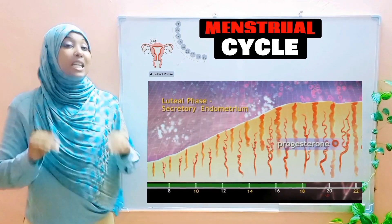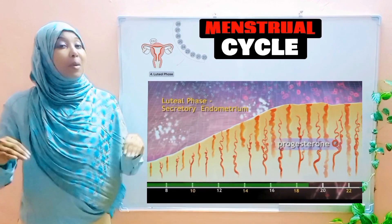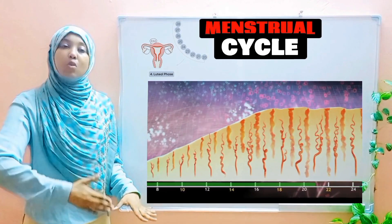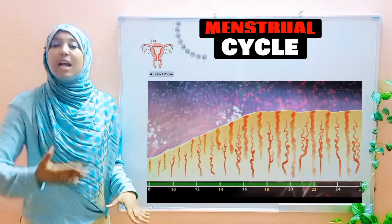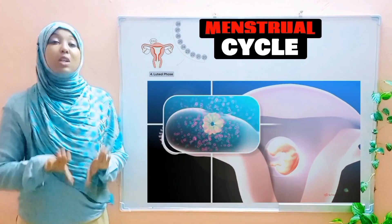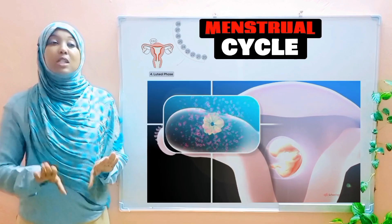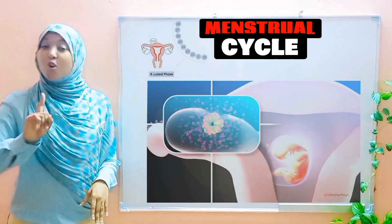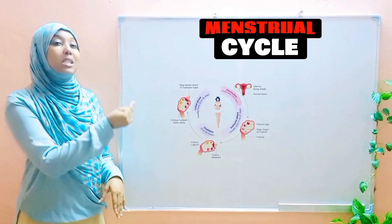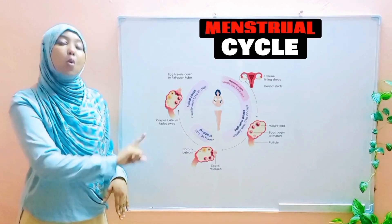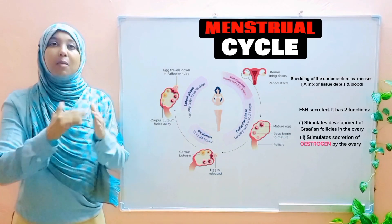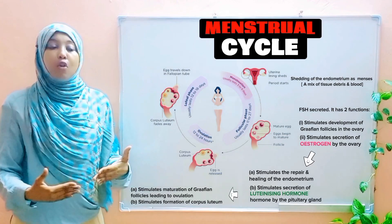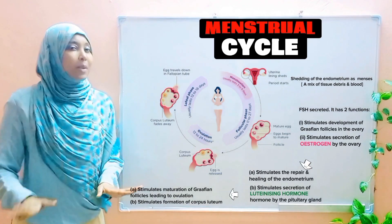If fertilization does take place, progesterone continues to be secreted until birth. Progesterone is very important because it maintains pregnancy. It also inhibits follicle-stimulating hormone, preventing FSH from performing its function.